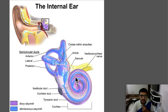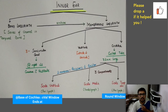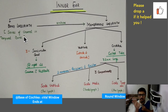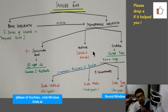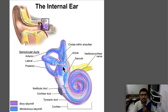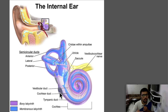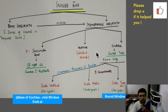Focus on the snail-shaped part — this is your cochlea. Simplify things: semicircular canals done, vestibule done, now focus on cochlea. The cochlea is a coiled tube, 35 millimeters long, making approximately two to three turns.